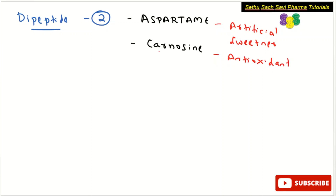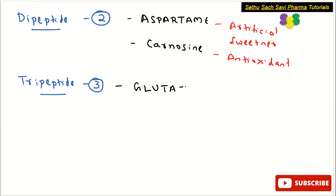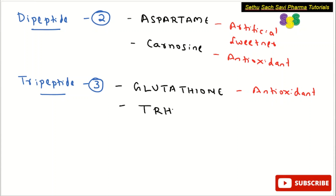Coming to tripeptide — the number of amino acids is three. The important example to remember is glutathione, which is an example of a tripeptide and is in fact an antioxidant. One more example is thyrotropin releasing hormone (TRH), which also contains three amino acids and is therefore also an example of a tripeptide.